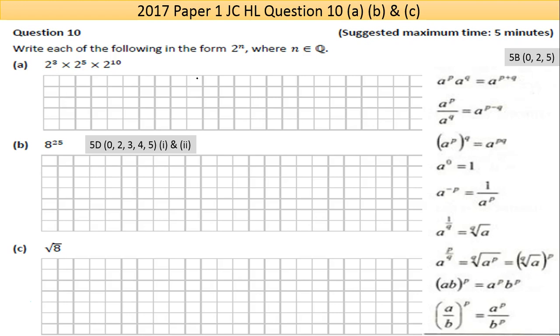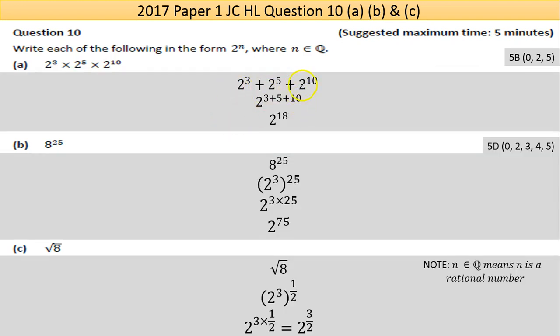Part A is looking at multiplying 2 to the power of 3 times 2 to the power of 5 times 2 to the power of 10. This rule here is applying this one here. When you multiply two base numbers that are the same, you add the powers. So in this case it's 2 to the power of 3 plus 5 plus 10, so your answer would be 2 to the power of 18.